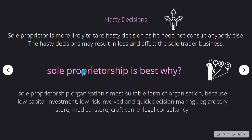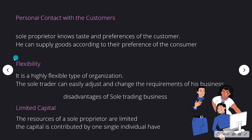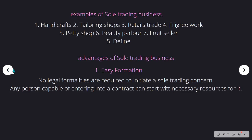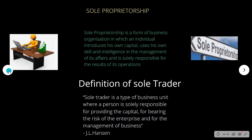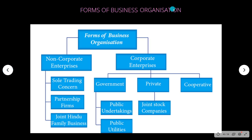Even in spite of these drawbacks, we say sole proprietorship is best. Why? Because it is enough to have a low capital investment, you can involve in activities with low risk, and you can take decisions very quickly. Examples include maintaining a grocery store, a medical store, a craft center, or a legal consultancy. So we saw the forms of business organization, the meaning and definition, characteristics, examples, advantages, and drawbacks of sole proprietorship. Thank you.